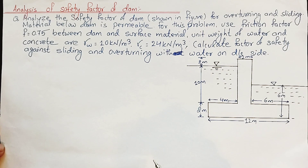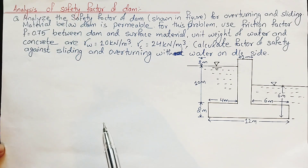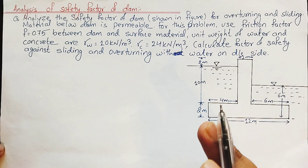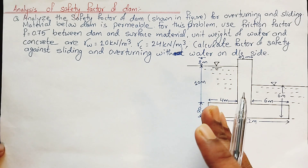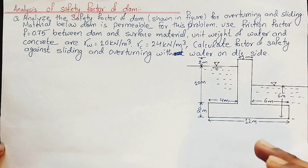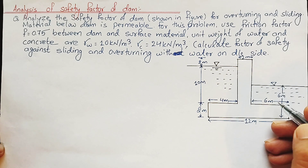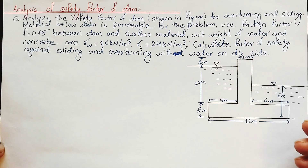Hello everyone, welcome back to Civil Learning Online YouTube channel. Today I am going to discuss the analysis of safety factor of a dam. This is the second concept related to the analysis of safety factor of a dam. In the previous video, I discussed a dam where we checked the safety factor for sliding and overturning conditions with no water on the downstream side. In this numerical, we have water up to six meters on the downstream side.